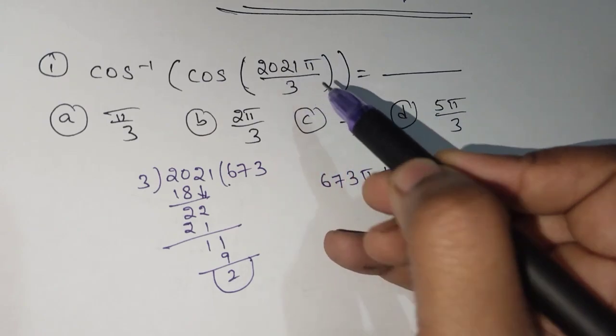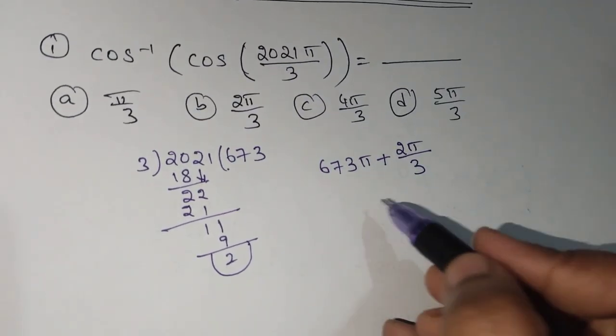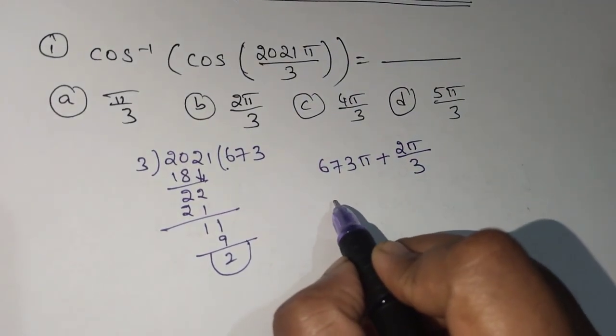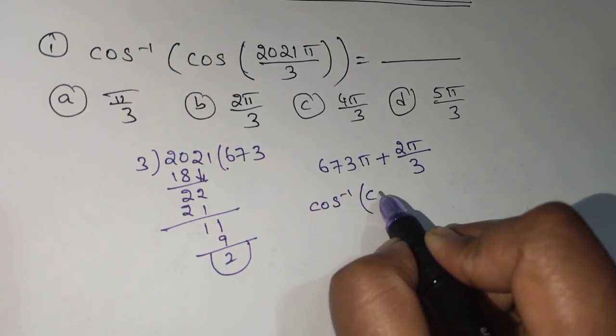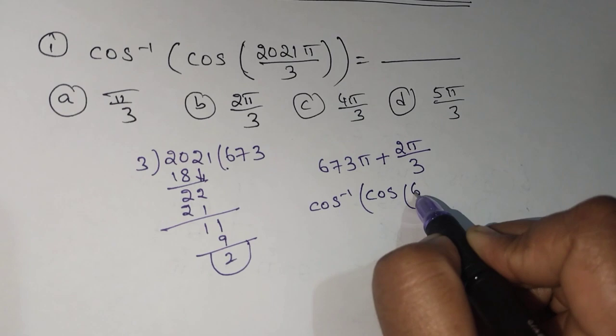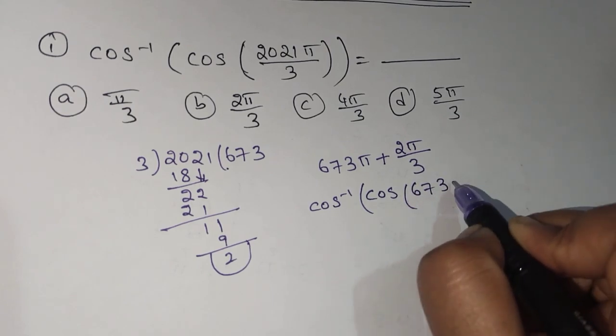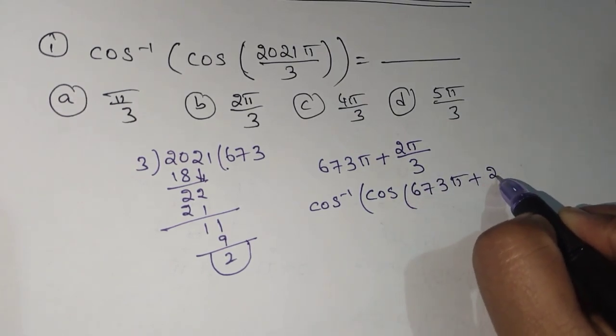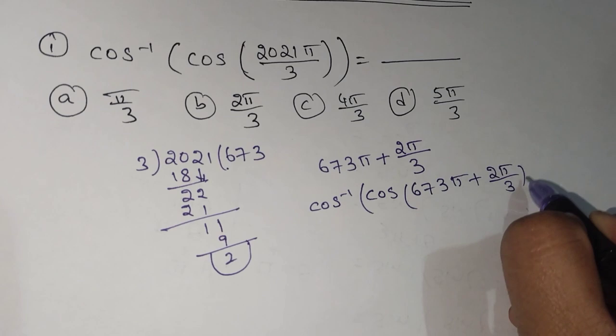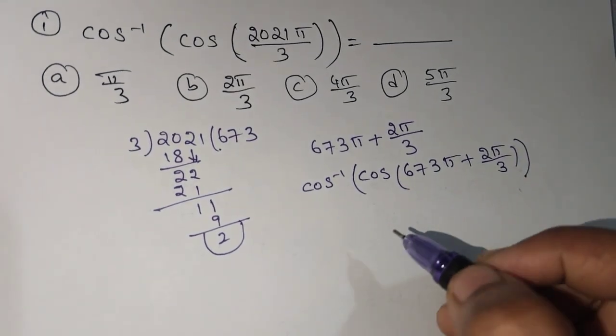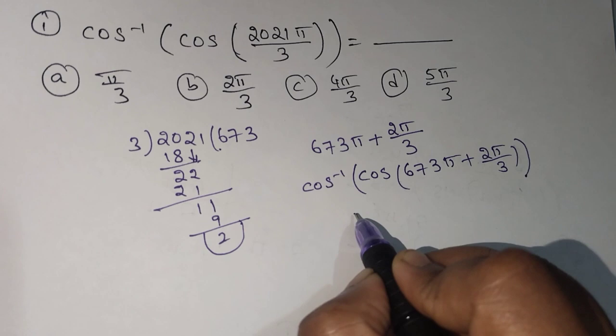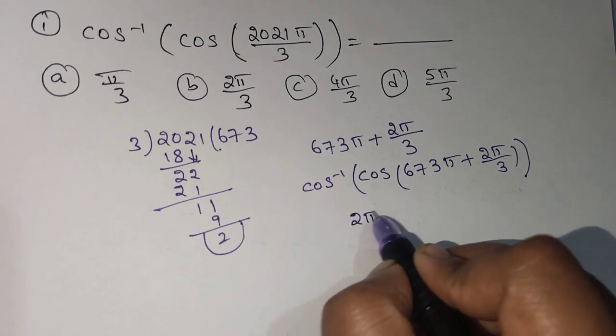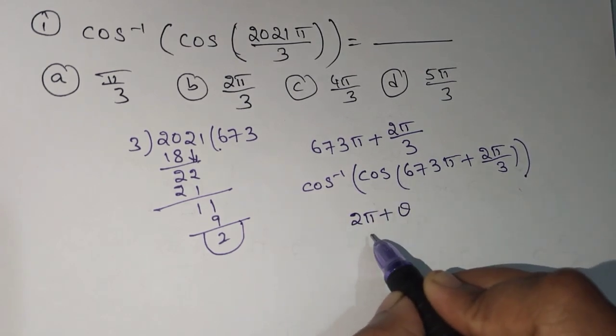Now cos of... write this value in that: cos inverse of cos of 673π plus 2π/3. We know any even number like 2nπ plus θ, when it closes one cycle we remove this and take directly θ.